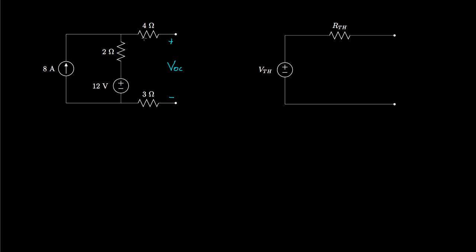For the circuit on the left, if the terminals are open, no current will flow through the 4-ohm resistor or the 3-ohm resistor, and the voltage at these two terminals will be the same as the voltage across this resistor and the 12-volt voltage source. All of the current from the 8-amp current source will flow through this loop. So we'll see 8 times 2, or 16 volts, across this resistor, and then a 12-volt drop across the source.